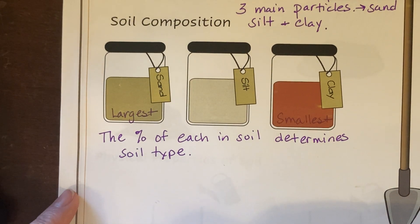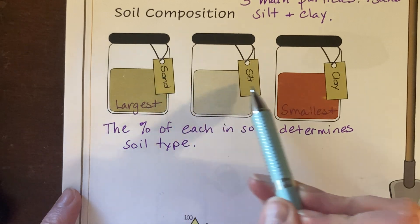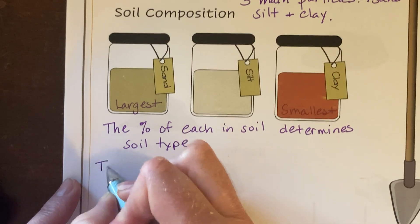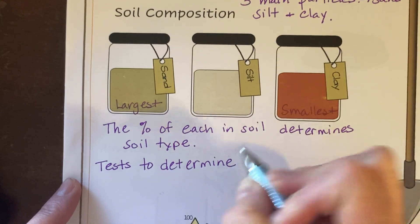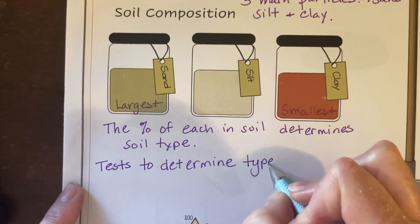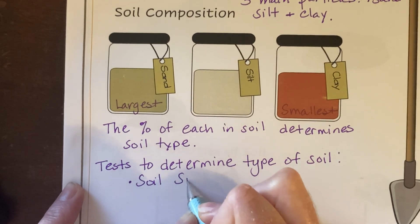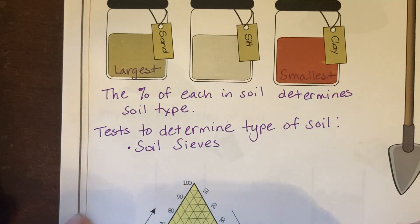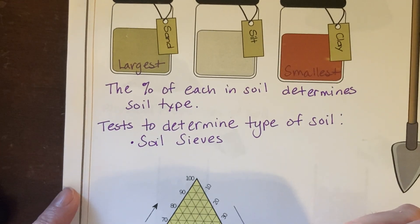So how do farmers or gardeners determine the type of soil? How do we find out what the percentage of sand, silt, and clay in the soil is? We can do a couple of different tests. You can do soil sieves — that's where you put a sample of your soil and you shake it through the sieves and it separates them by particle size. Then you weigh each amount of particle size divided by the total weight and you can get your percentage of sand, silt, and clay.